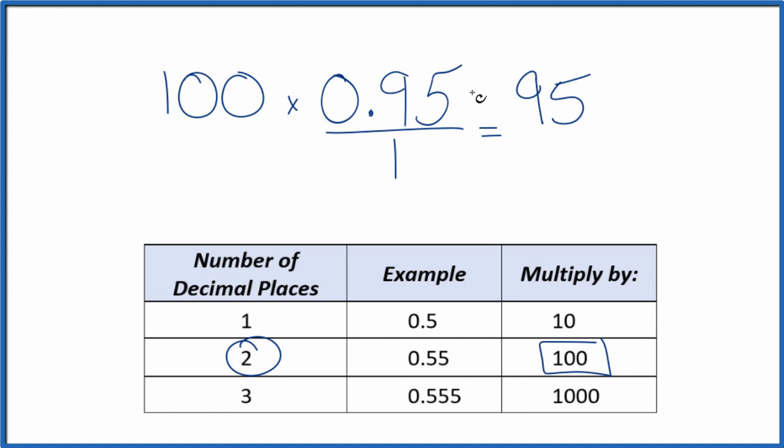But we can't just multiply the numerator by 100. We also need to multiply the denominator by 100. That's because 100 divided by 100 is just 1. So when we multiply by 1, we don't change the value, just the way it's written. 100 times 1 equals 100.